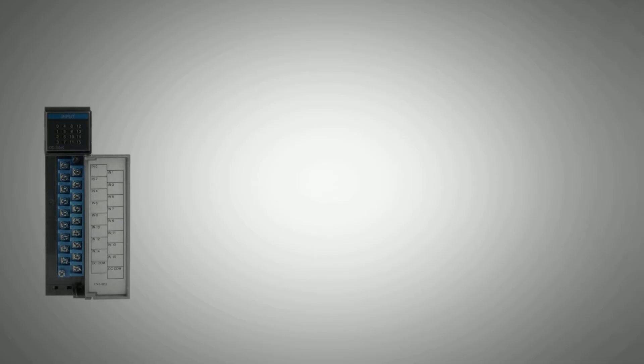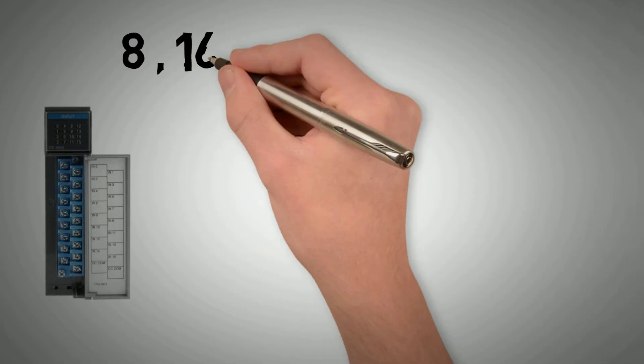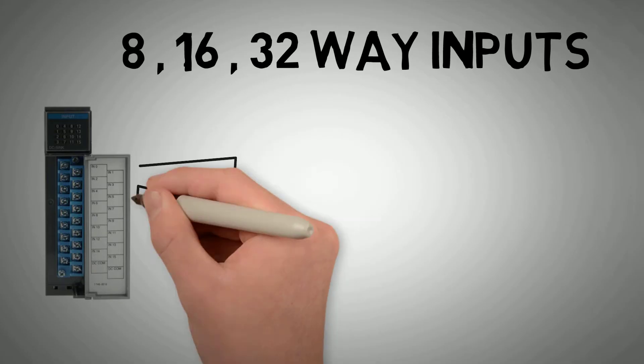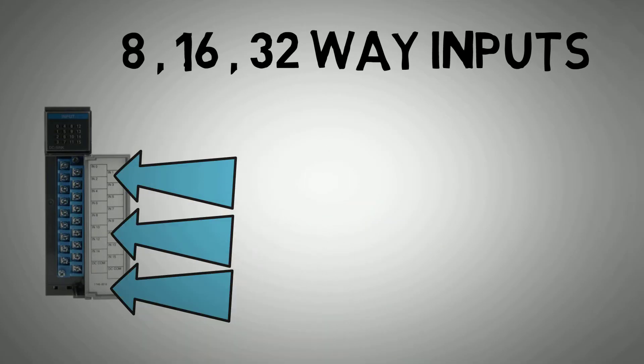Digital input cards are usually multi-channeled and are usually found in 8 or 16 channel formats. This means that each card can have multiple channels and each one of those channels can be connected to a different field device.